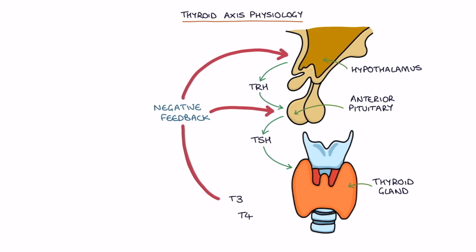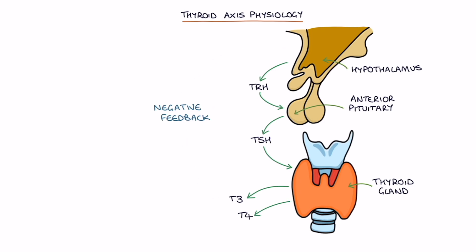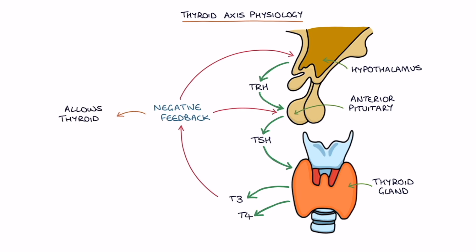Suppressed TRH and TSH results in lower amounts of T3 and T4. The lower T3 and T4 offer less negative feedback and less suppression of the TRH and TSH, and this results in more of these hormones being released and a rise in T3 and T4. Through negative feedback, this allows the thyroid hormone level to be closely regulated and kept within normal limits.